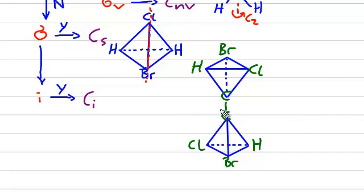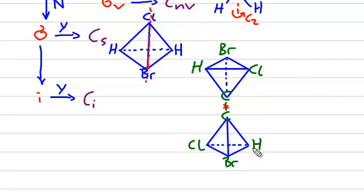And this one here by a chlorine atom. The inversion center for this molecule would be right here, meaning if you invert this carbon atom you get this carbon atom. For this chlorine you end up with this chlorine, this bromine gives this bromine, and for this hydrogen atom you end up with this hydrogen atom — after you do the inversion symmetry operation.